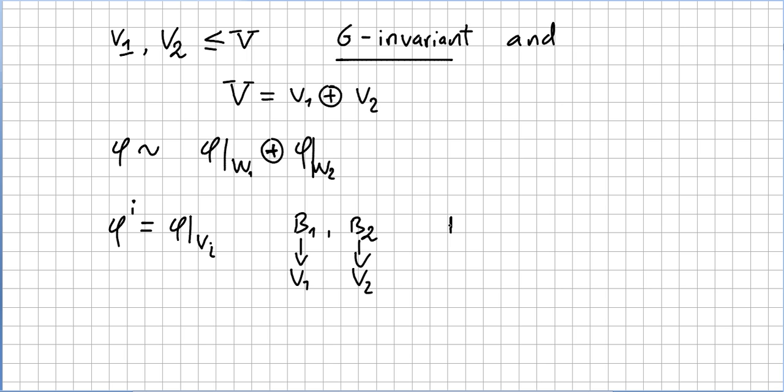And, you know, just follow the definition of direct sum, that the basis will be the union of both bases. So, B1 union B2 will be a basis for the vector space.